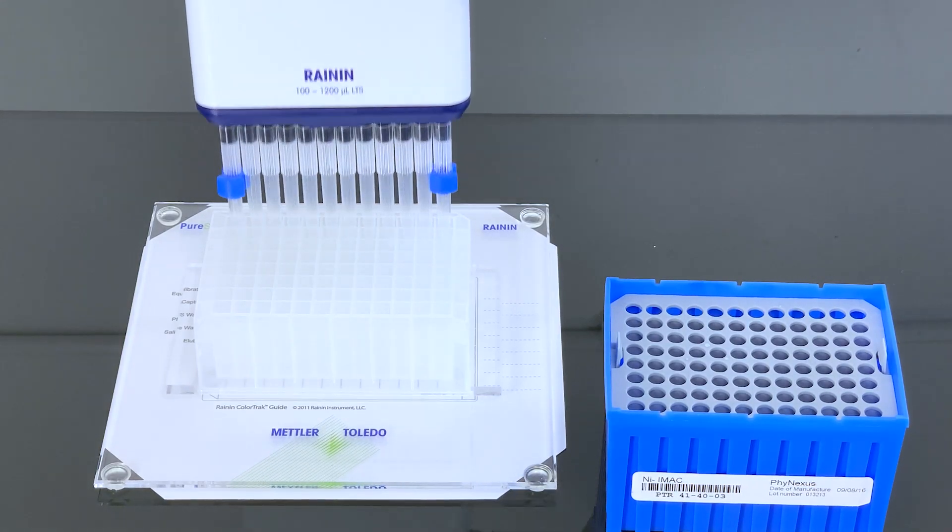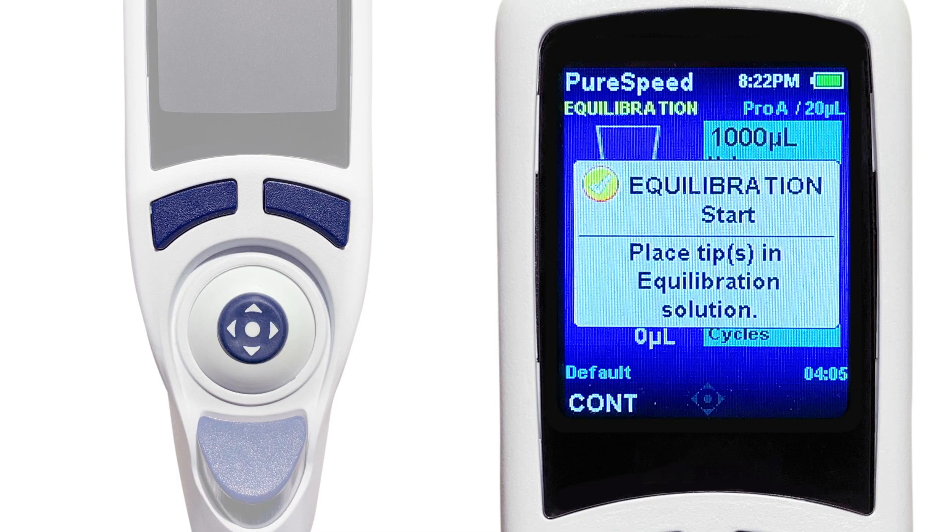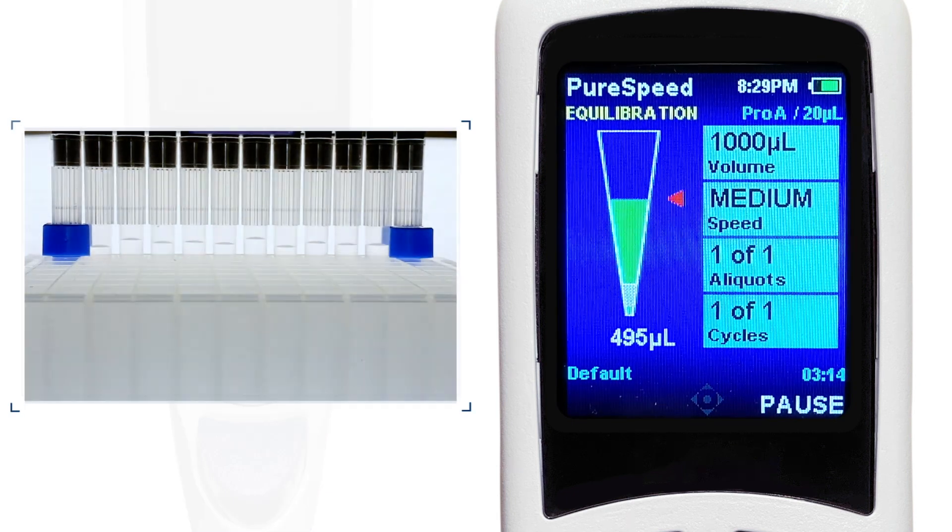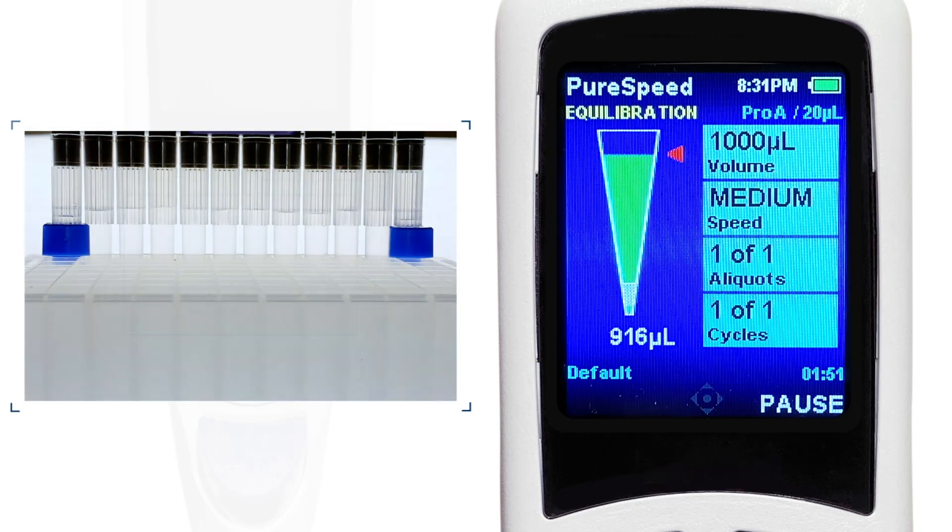Then place the pipette with tips in the first row of the deep well plate. The system is now ready to start your selected method execution. Press the left button under the screen to select Continue. The pipette will now start to cycle through the pipetting protocols.